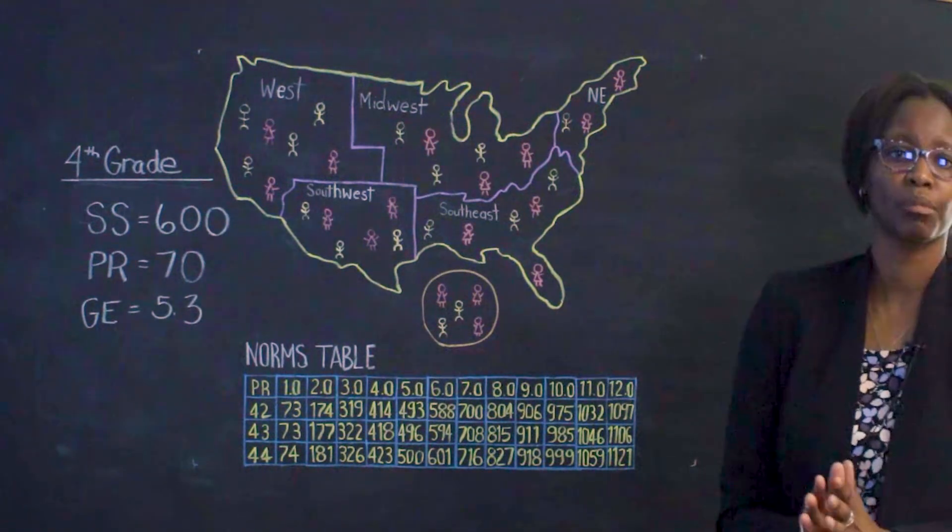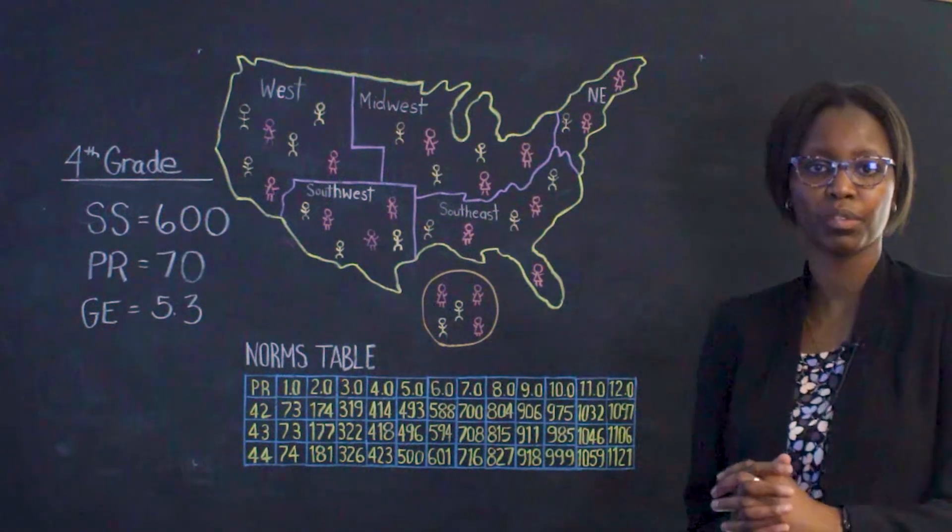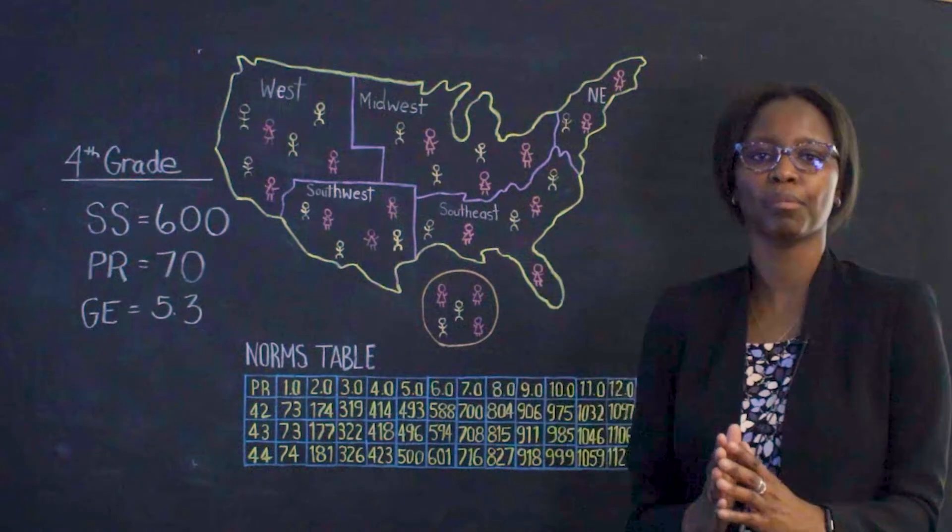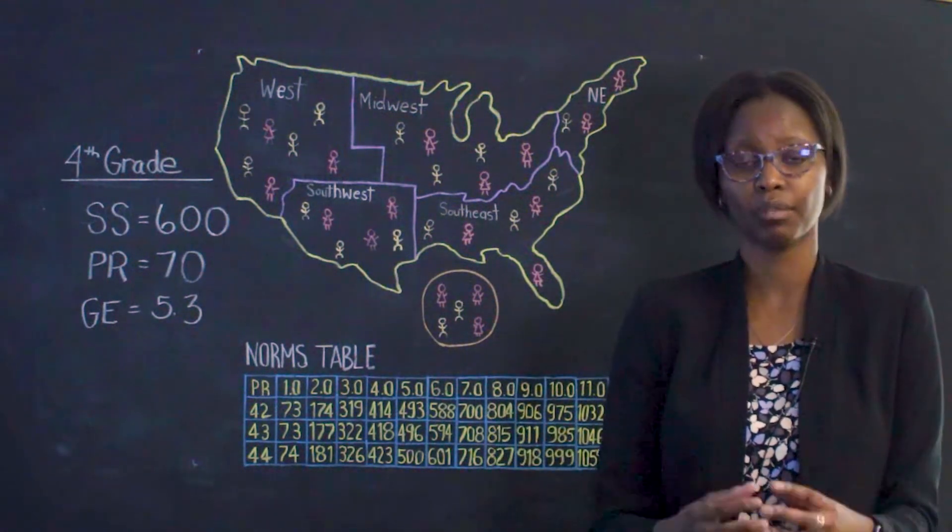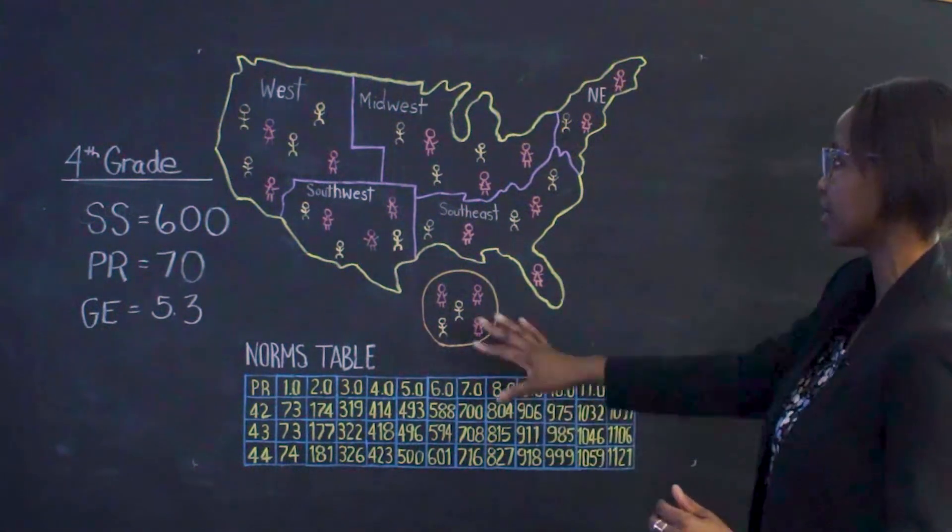So, how are norms developed? First, we take a sample of students from across the nation. We take a sample because it's not possible to test every single student in the country. If we could, that would be ideal. But we cannot, so we take a sample.